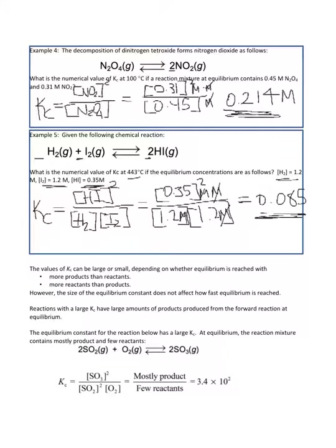For example, the equilibrium constant for the reaction below has a large Kc. At equilibrium, the reaction mixture contains mostly products with only a little bit of reactants. When you calculate Kc with products in the numerator and reactants in the denominator, the larger the products, the larger the Kc. If you had larger reactants in the denominator, you would have a smaller Kc. Large Kc means lots of products; small Kc means few products.